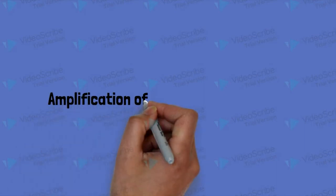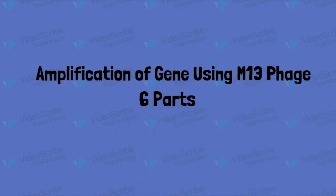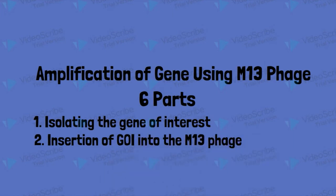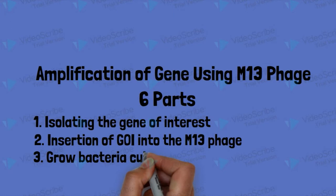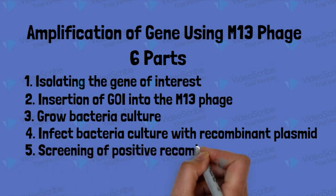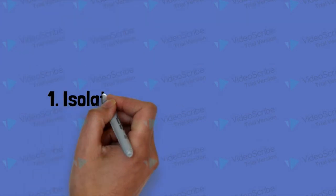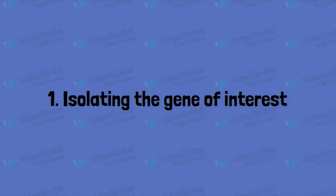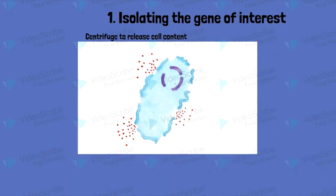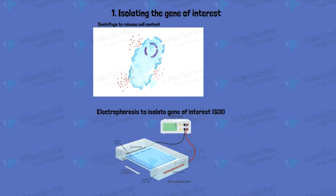Now let's see how we can utilize M13 phage for amplification of a gene. The amplification process can be separated into six parts: isolate the gene of interest, insert it into the M13 phage, grow bacterial culture, infect bacterial culture with recombinant plasmid, screen the positive recombinants, and isolate the amplified genes. In the first step, the targeted cells containing the gene of interest are lysed by centrifugation to release cell contents, and then gel electrophoresis of the supernatant is carried out to isolate the gene of interest at specific bands.